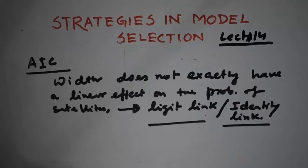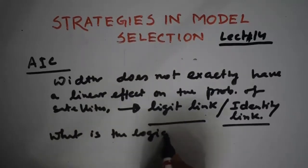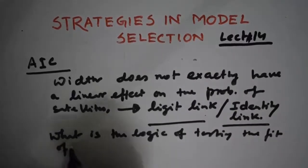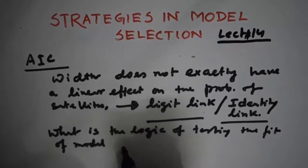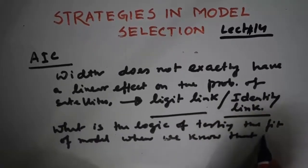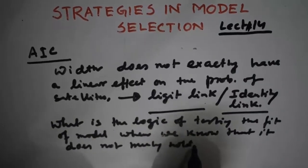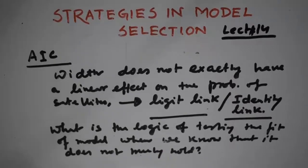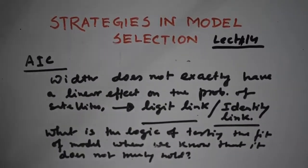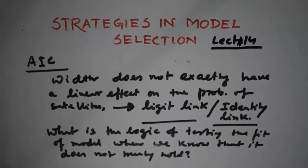What is the logic of testing the fit of a model when we know that it does not truly hold? A simple model has relatively little bias. Describing reality well, it tends to provide more accurate estimates of the quantities of interest.